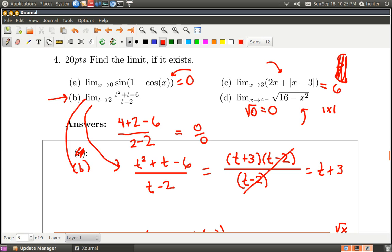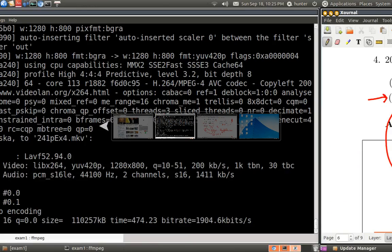All right. So that means that this limit that they gave us is the same thing as the limit as t goes to two of t plus three. And of course this is just five. And so this one is five. And that's all. Bang, bang, bang. They're all really easy. Great. Good.